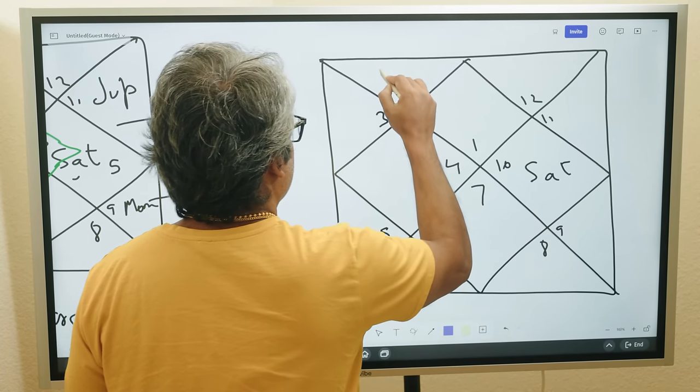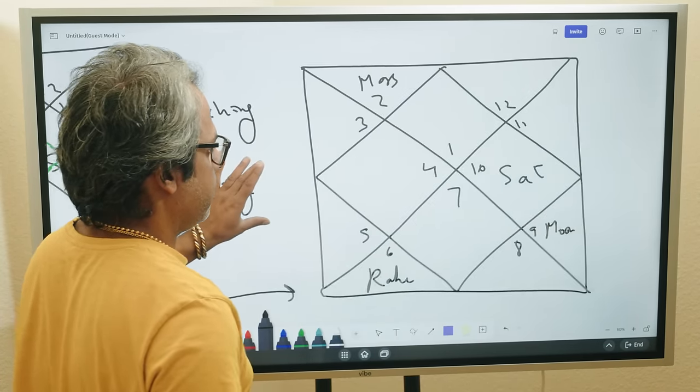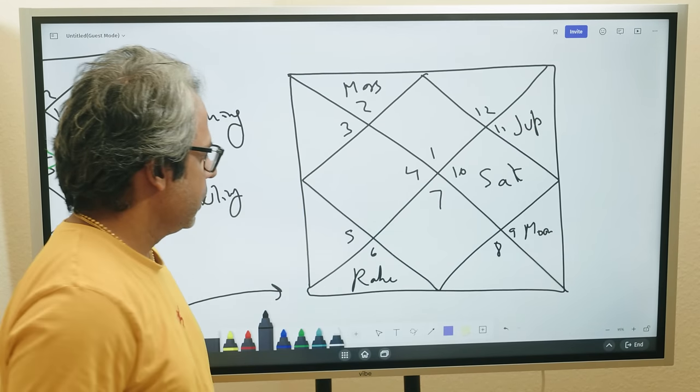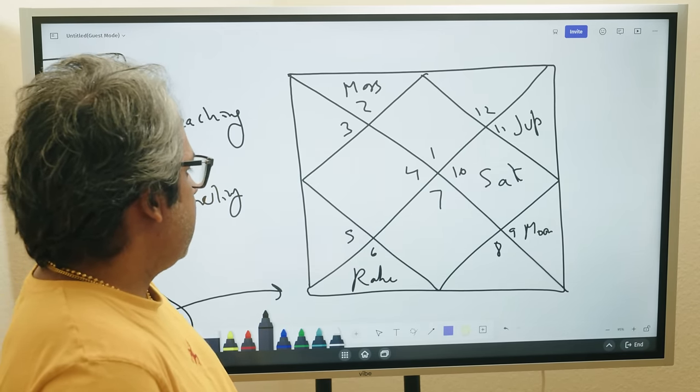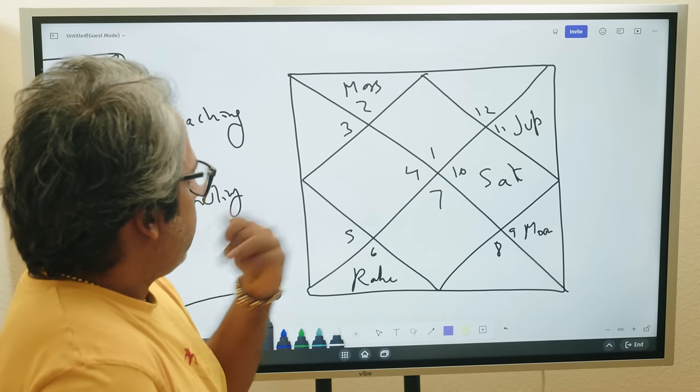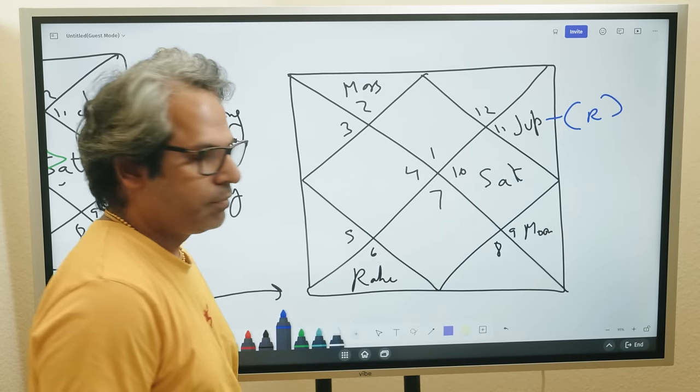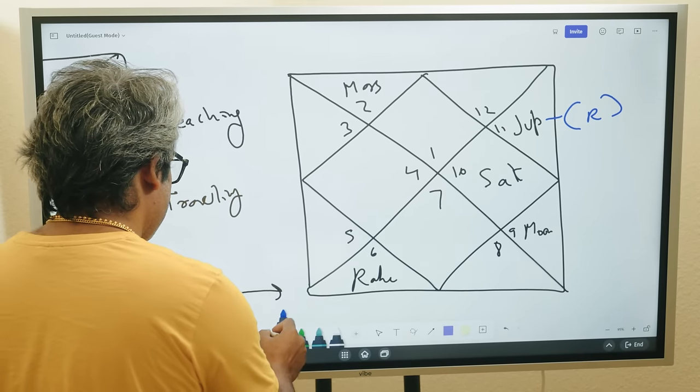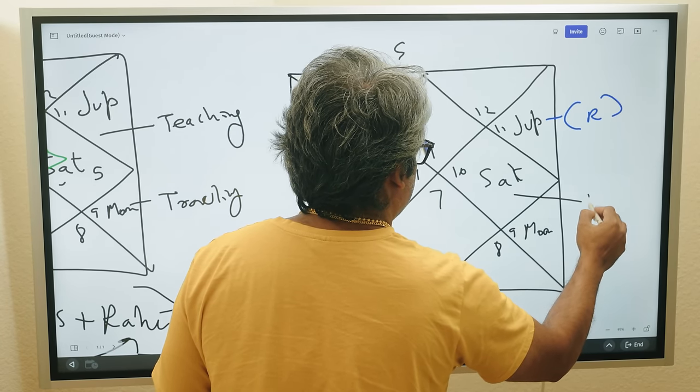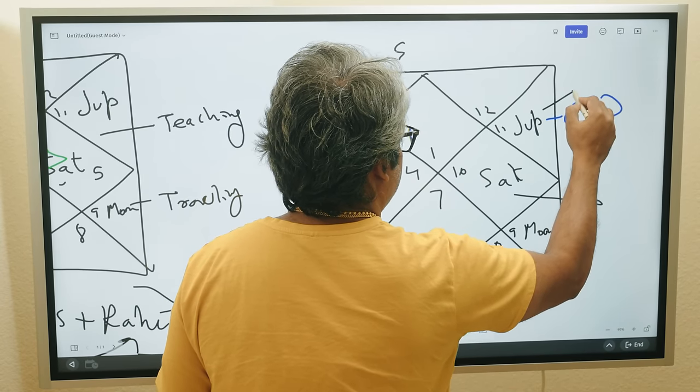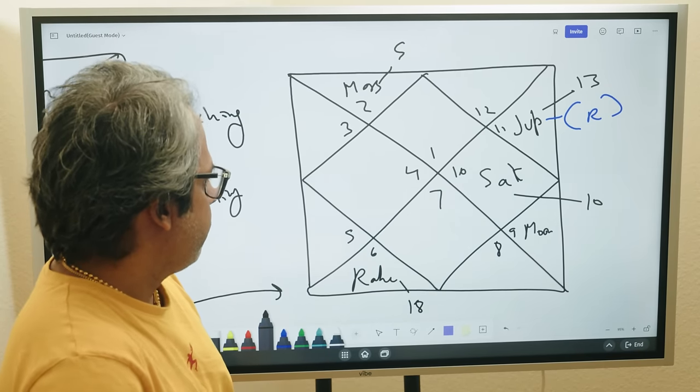Let's make another chart. Let's get a little bit complicated. Saturn, Mars, Rahu, Moon, and then Jupiter. Profession, the question is still about profession. Now let's make it a little bit complicated. We'll make Jupiter retrograde. Since we know, let's put our degrees in. 5 degrees, and then we'll put 10 degrees here, we'll put 18 degrees here, we'll put 13 degrees here.